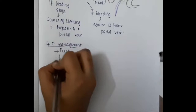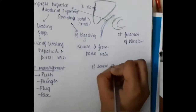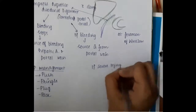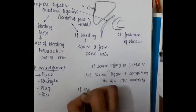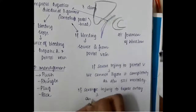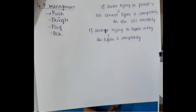The four P's for management are: Push (manual compression), Pringle's manoeuvre, Pack (packing the liver with mops to create tamponade effect), and Plug. If there is severe injury to the portal vein, we cannot ligate it completely as it is associated with 50% mortality. If there is severe injury to the hepatic artery, we can ligate it completely.